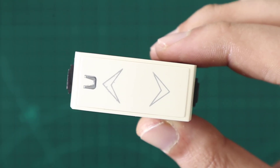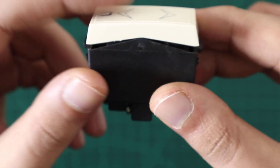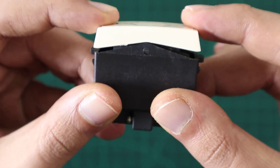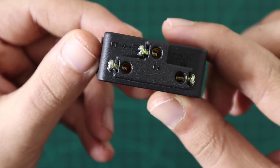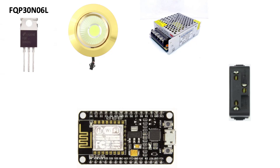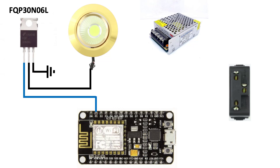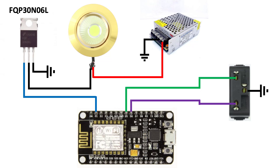We also need two pushbuttons. I will use this switch, which is simply two pushbuttons with a common pin. Our circuit is very simple: the MOSFET gate is connected to GPIO5, the drain pin to the bulb black wire, the source pin to GND, the bulb red wire to the power supply positive line, and the power supply GND to GND. The two pushbuttons are connected to GPIOs 12 and 14.